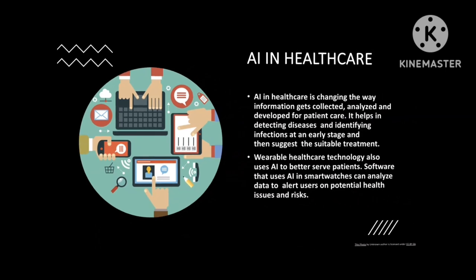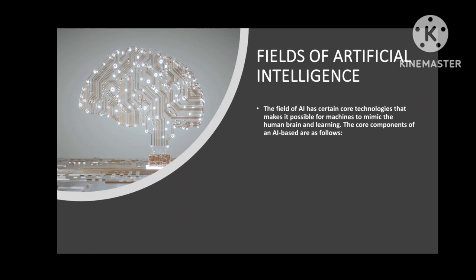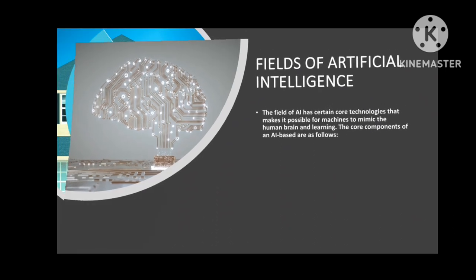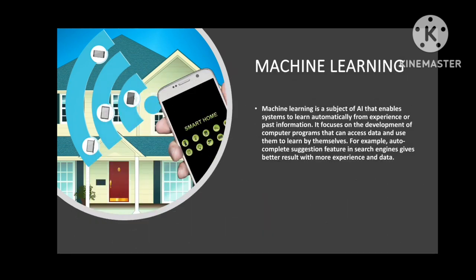The next topic is the fields of artificial intelligence. The fields of AI have core technologies that make it possible for machines to imitate the human brain and learning. The core components of AI are as follows. First is machine learning. Machine learning is the subset of AI that enables systems to learn automatically from experience or past information. It focuses on developing computer programs that can access data and learn by themselves. For example, the autocomplete suggestion feature in search engines gives better results with more experience and data.